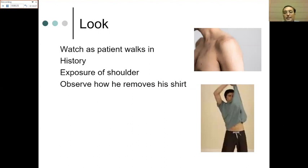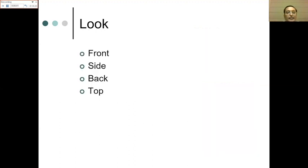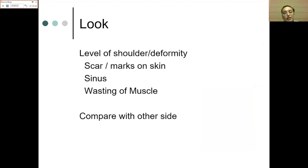Proper exposure for shoulder examination is from the umbilicus upward — the body should be bare so we can see both sides of the shoulder, front, back, and neck. For female patients, a lady chaperone is required. Observe how the patient removes their shirt — this gives a clue about the pathology. Inspect from the front, side, back, and do not miss from the top. Look for shoulder level, deformity, skin scars, sinuses, muscle wasting — compare to the other side.